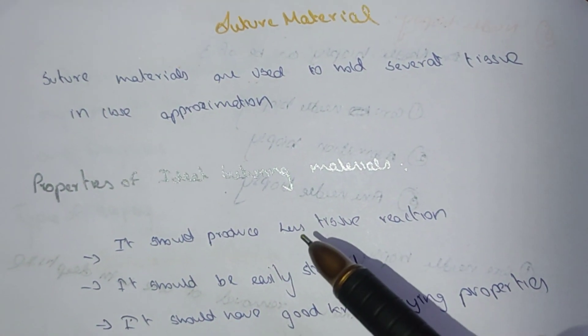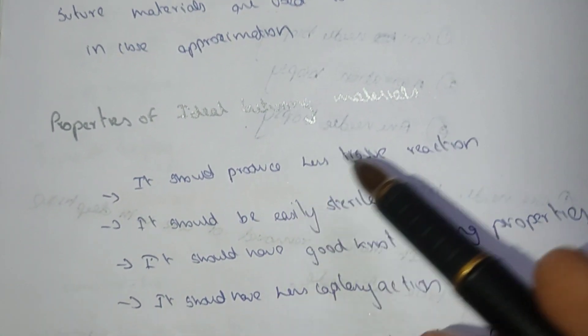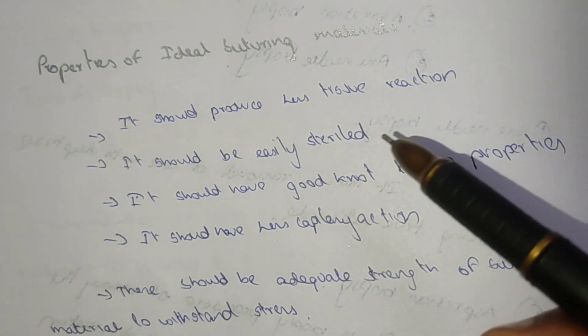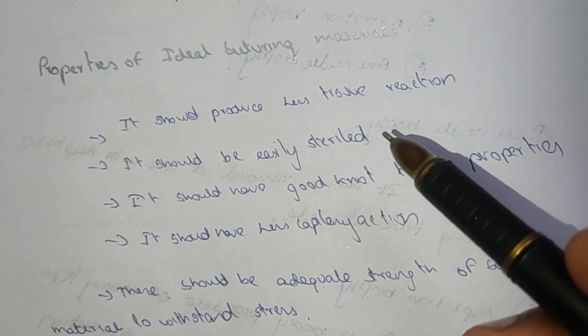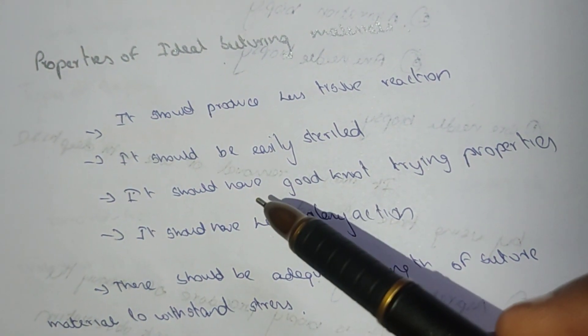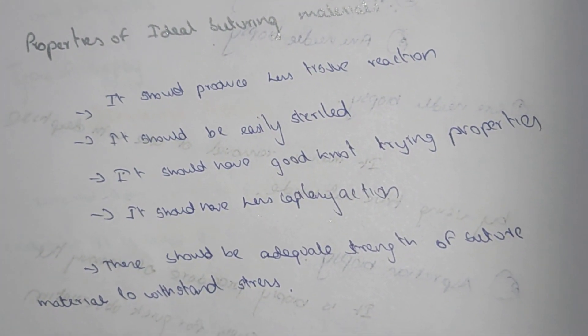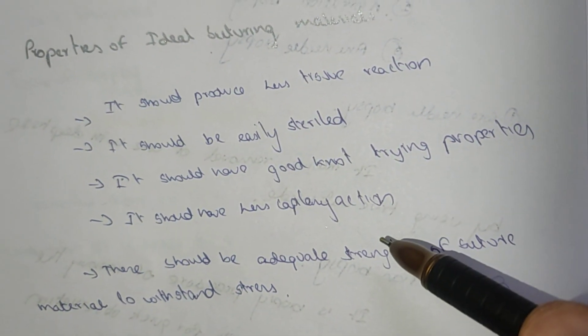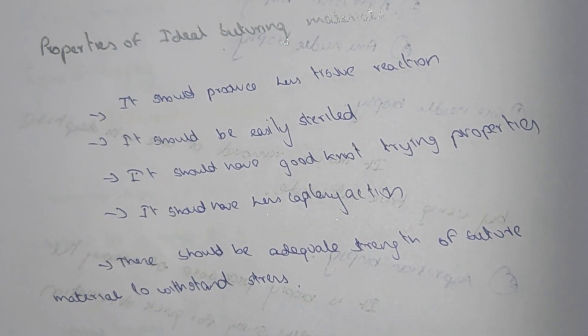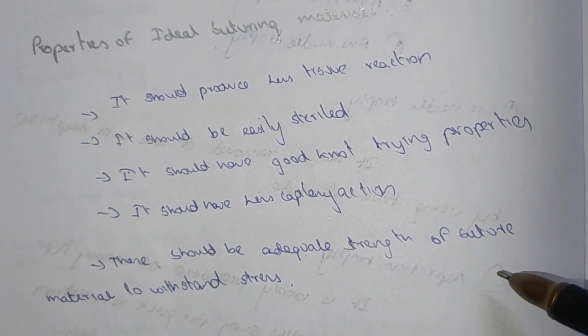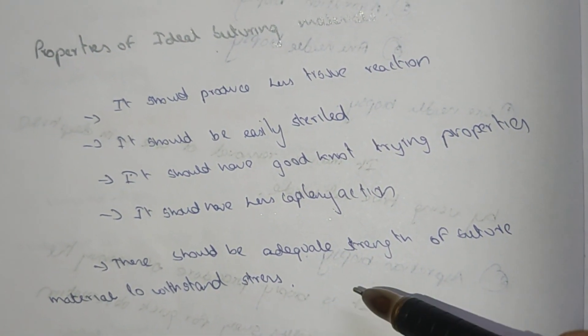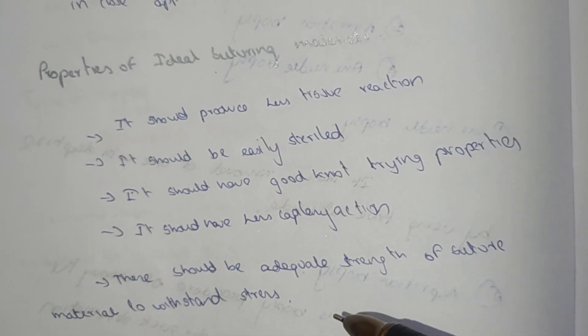The properties of suture materials are: it should produce less tissue reaction, it should be easily sterilized, it should have good knot tying property, it should have less capillary action, and there should be adequate strength for the suture material to withstand the stress.